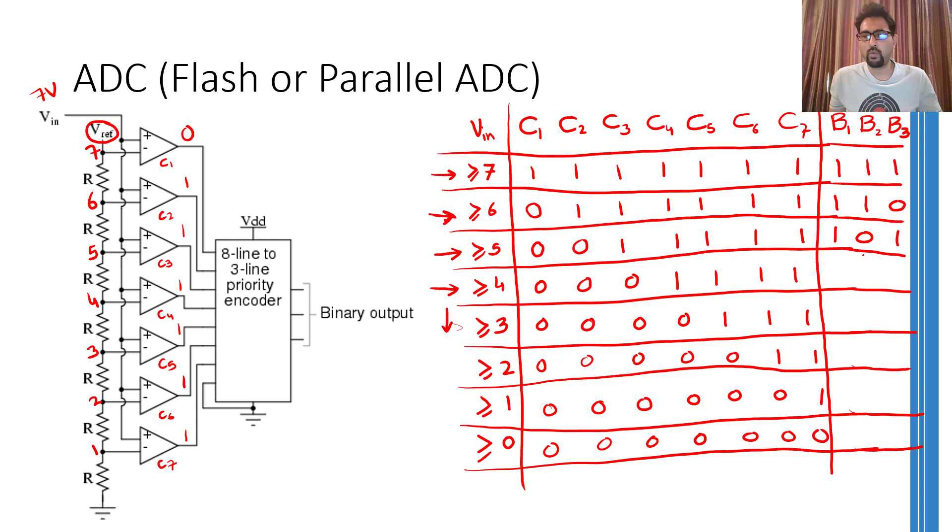Then the sixth level can be encoded using 1, 1, 0, and 1, 0, 1, 1, 0, 0, 0, 1, 1, and the last would be 0, 0, 0. So using 3 bits I can encode 8 levels.